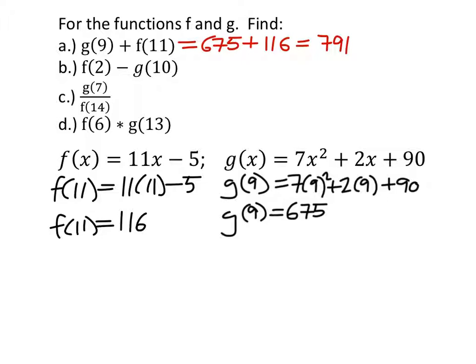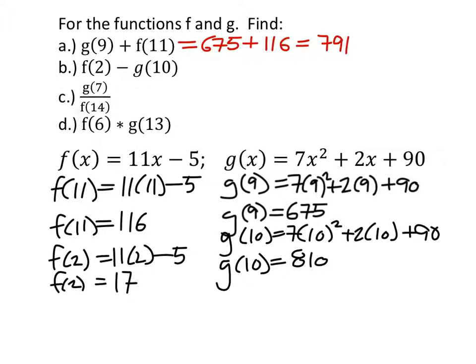All right, well, what about F of 2? So now I've got F of 2, which is 11 times 2, minus 5, which is 17, right? And G of 10. So that gives me 17 minus 810, which is, it's going to be negative. 793.